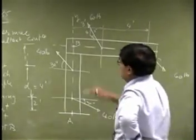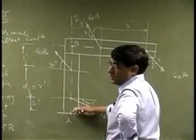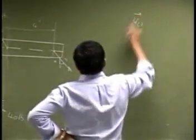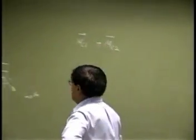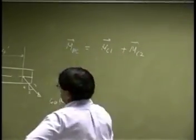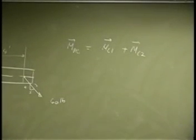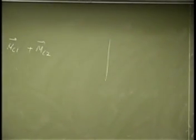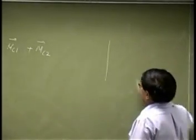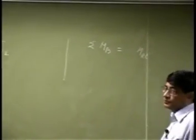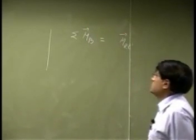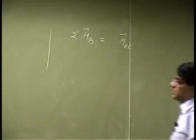First, find the moment of this couple — call it MC1. Then find the moment due to the second couple — call it MC2. Add the two and that gives the resultant couple. The second approach is to sum all the moments about point B, which should also give the resultant couple. Either way, we should get the exact same answer.